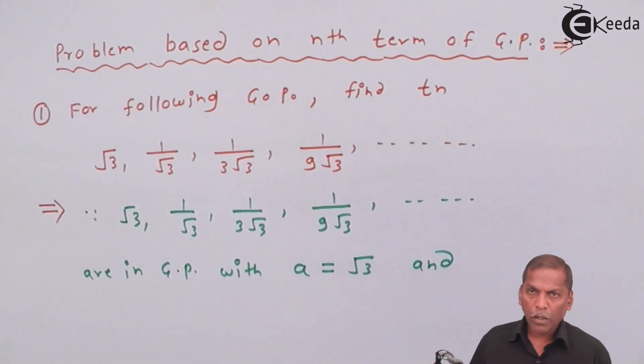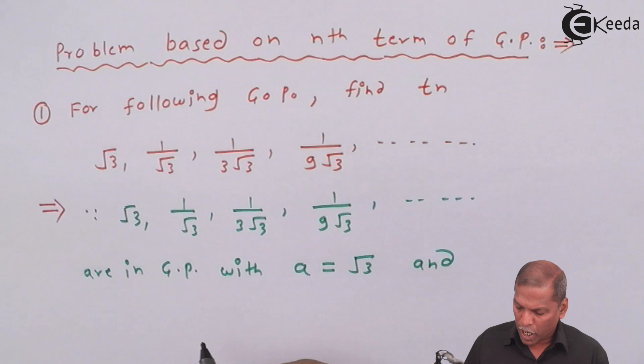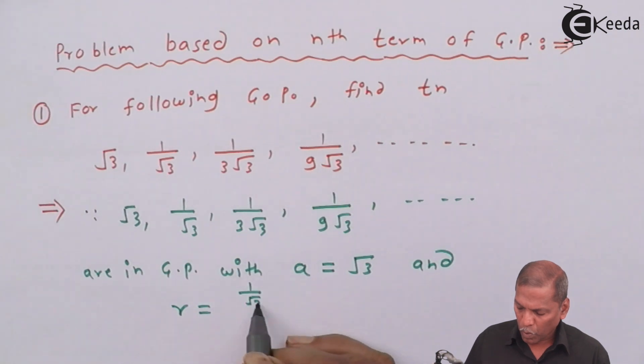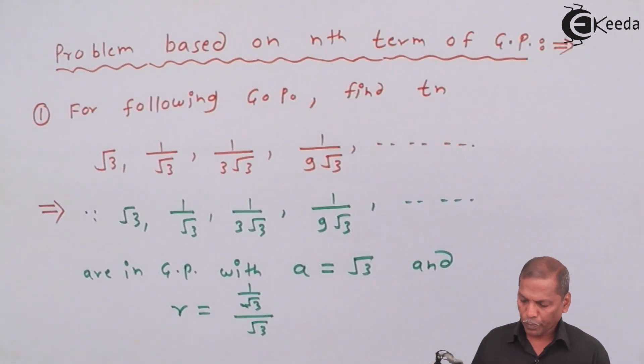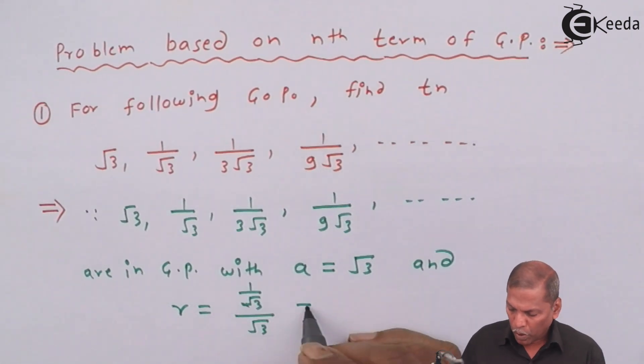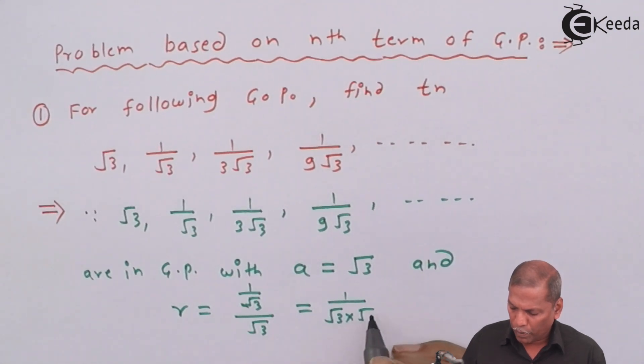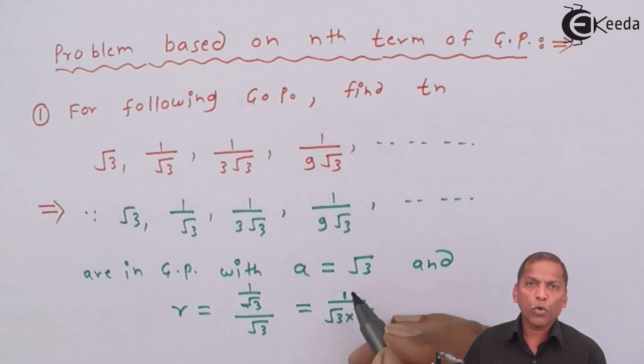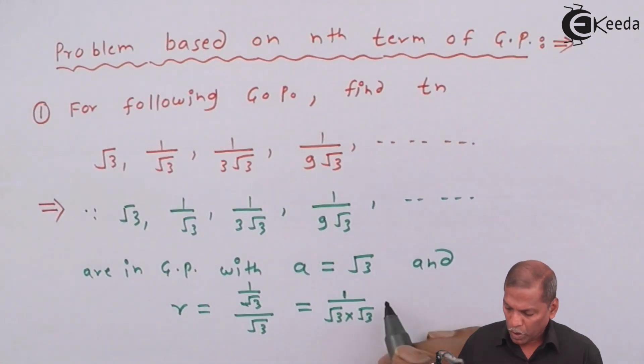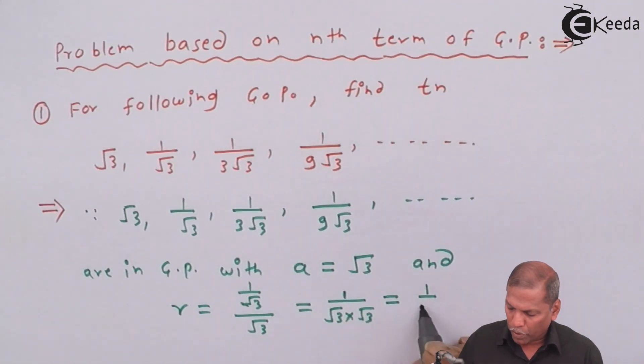And common ratio r is equal to 1 upon root 3 divided by root 3, that is equal to 1 upon root 3 into root 3, and that is equal to 1 upon 3.